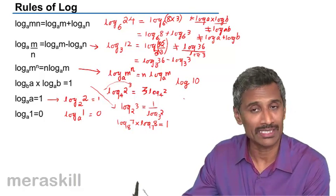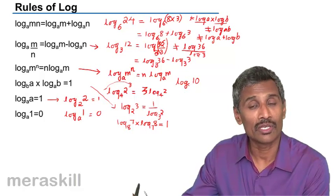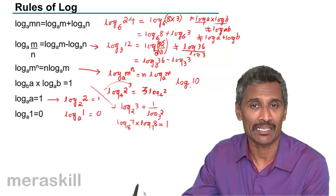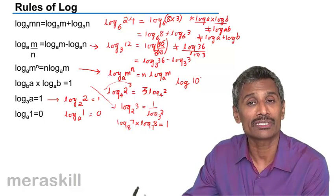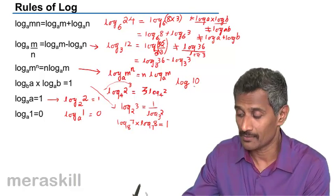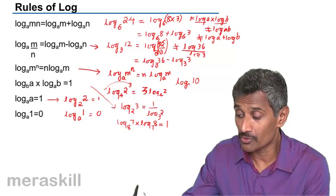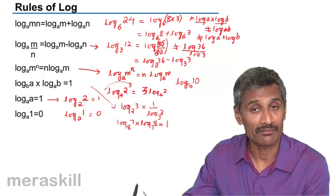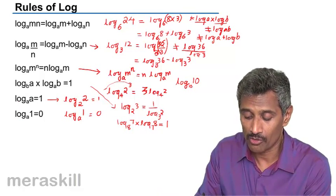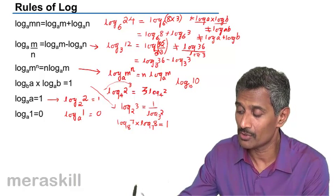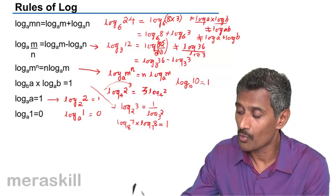Suppose the log is not mentioned. For example, log 10. It is understood that the base is 10. When you just say log 10, it means log 10 to the base 10. The value of this is going to be log 10 to the base 10, which is log of any number to the same base, which is 1.